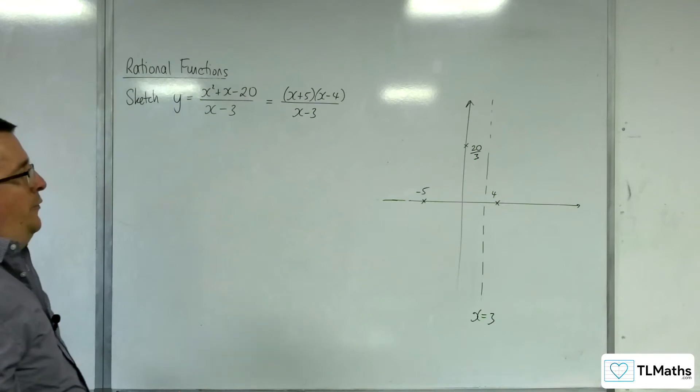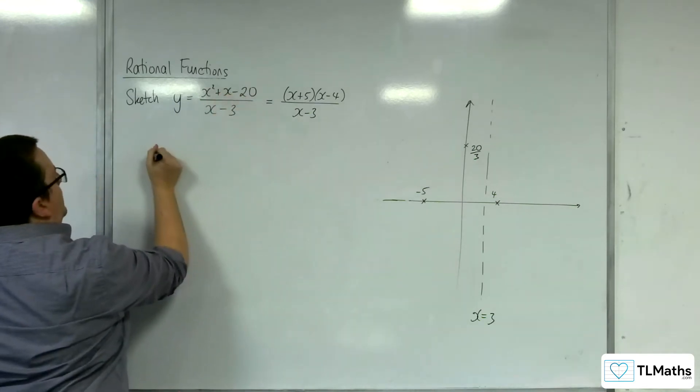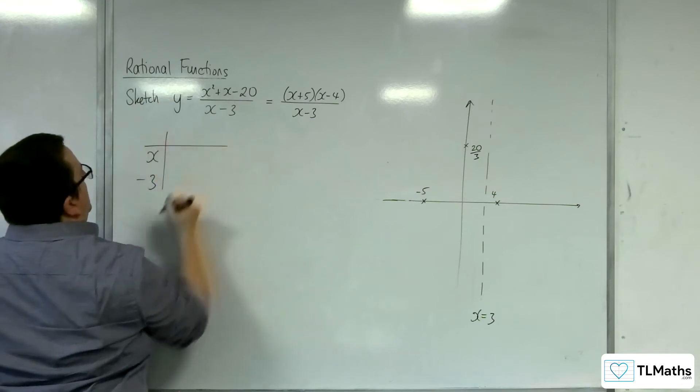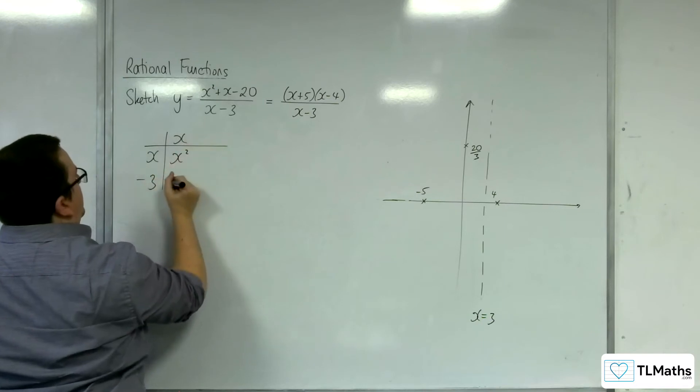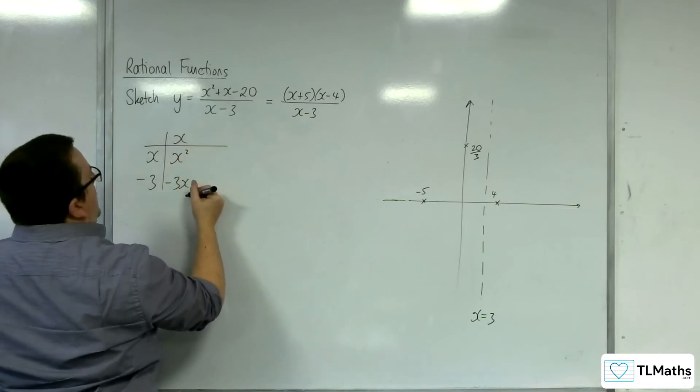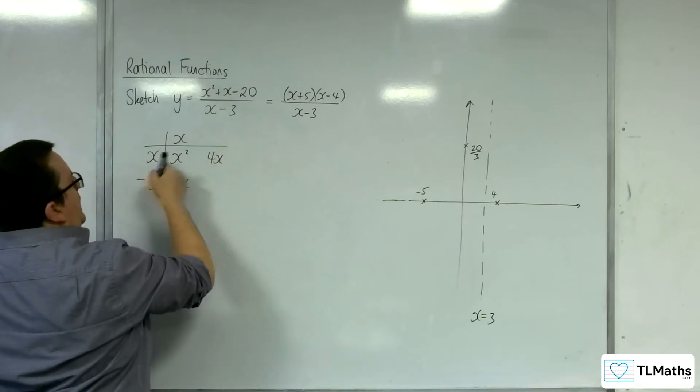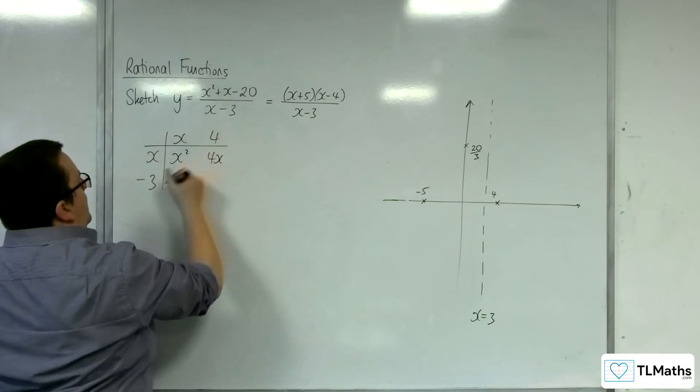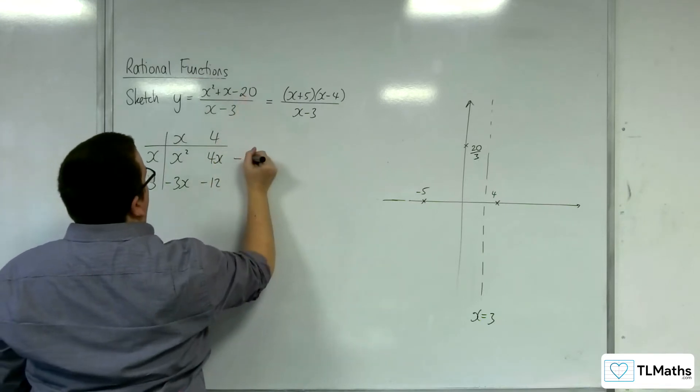Right. As for the oblique asymptote, we're going to divide the numerator by the denominator. So, x minus 3, and we want x squared, so that would have to be x, x into minus 3x. Now, we want x, we've got minus 3x, so we're going to have to add on 4x. x into 4x go 4, so we're going to get minus 12. We don't want minus 12, we want minus 20, so we're going to have to take away 8.